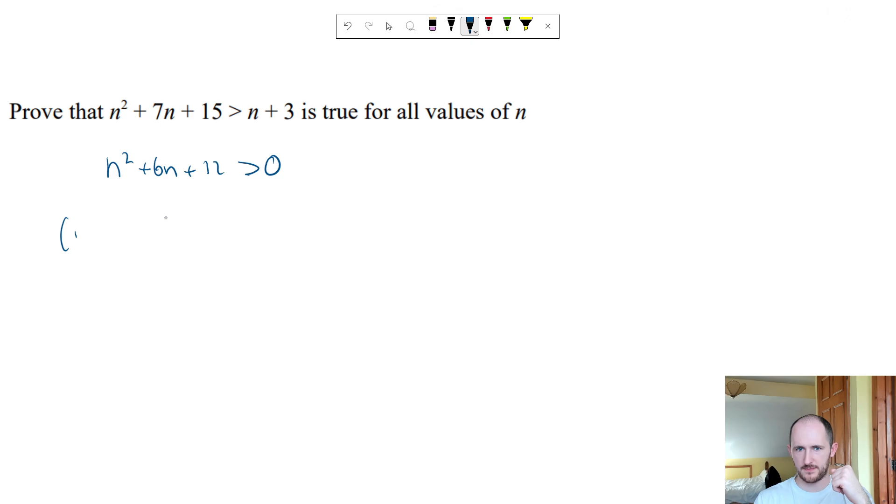So again doing the completing the square we have n plus 3 squared minus 3 squared. So n plus 3 squared minus 9 plus 12. And as you can see this is indeed bigger than 0.